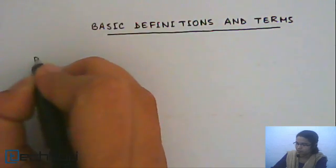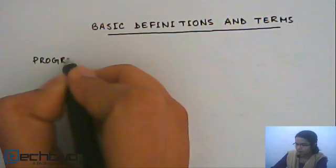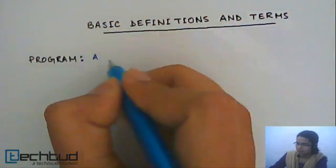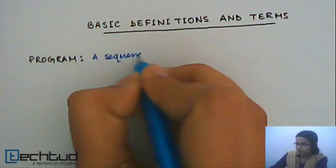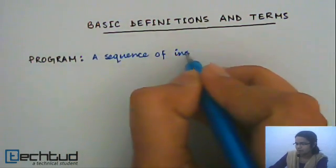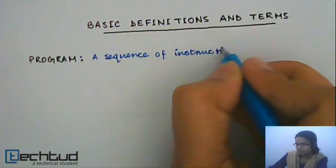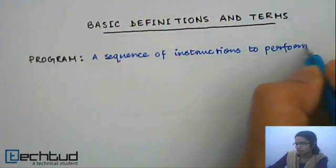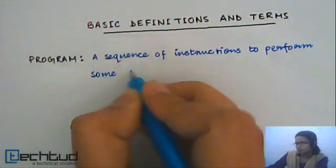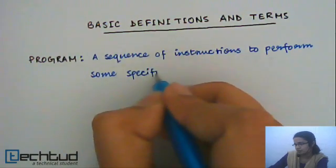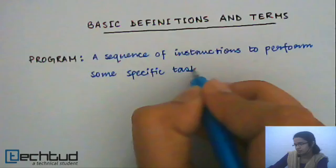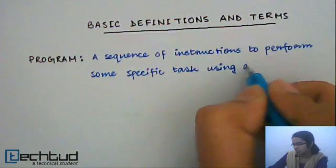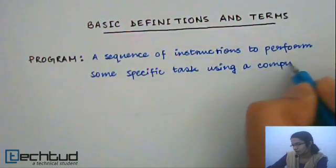First of all, let us understand what is a program. A program is a sequence of instructions to perform some specific task according to your requirement using a computer.